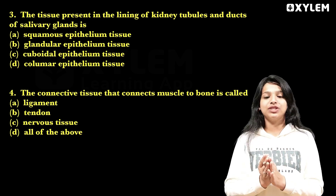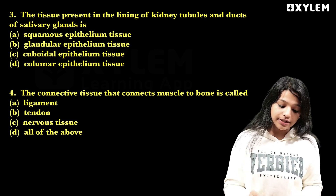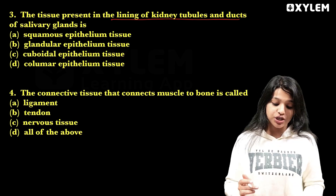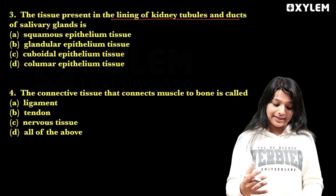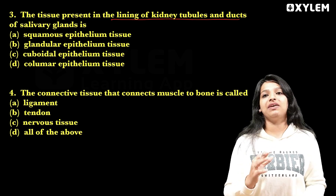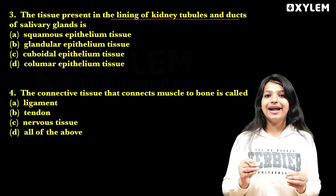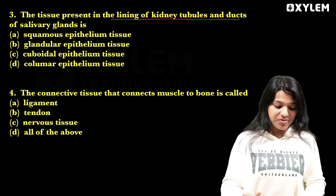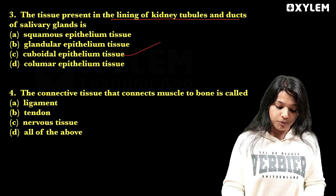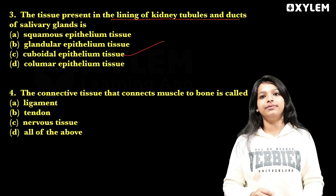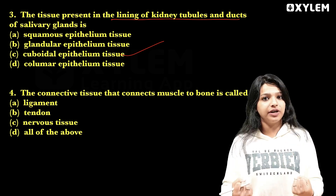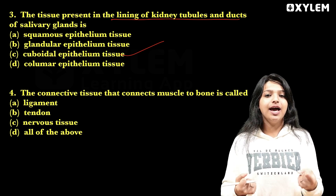The tissue is present in the lining of kidney tubules and ducts of salivary glands. What is the tissue found in kidney tubules and ducts? It is cuboidal epithelium tissue. There are different types of epithelium tissue.